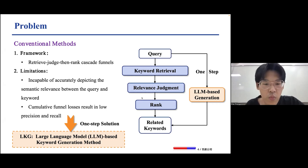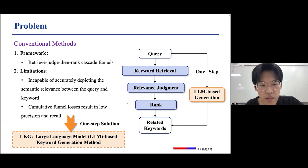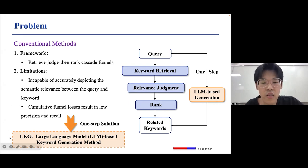Large language models have gained popularity for their astonishing aptitude in semantics and specific modeling, and are widely employed in generative information retrieval to directly generate targets that are responsive to an information need. Motivated by this idea, we propose an LLM-based keyword generation method to retrieve related keywords from the search query in one step.